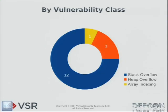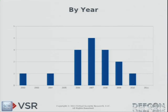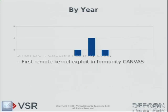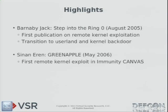Breaking these down by vulnerability class: a full three quarters — 12 of the 16 — were typical stack overflows. I think this is because these vulnerabilities are incredibly conducive to exploitation; they're very well understood and the steps of exploiting them are known. Three were heap overflows, which are frequently much more difficult. One — a Windows SMB issue — is actually an array indexing issue. I'm not sure there's enough data to draw meaningful conclusions, but 2007 was a busy year for kernel exploitation. And now some highlights of past work on remote kernel exploits.